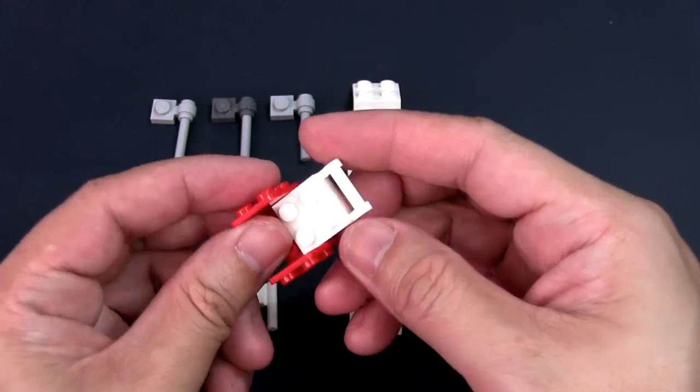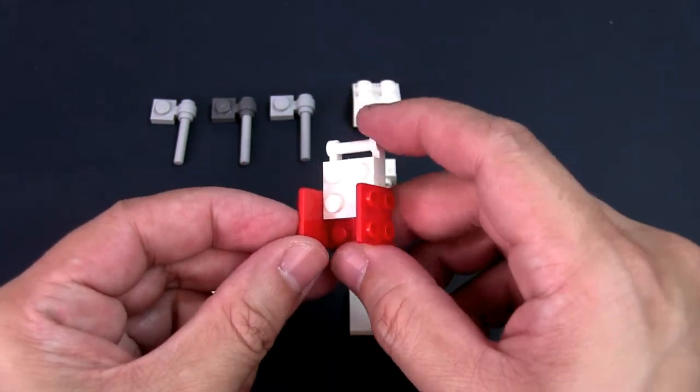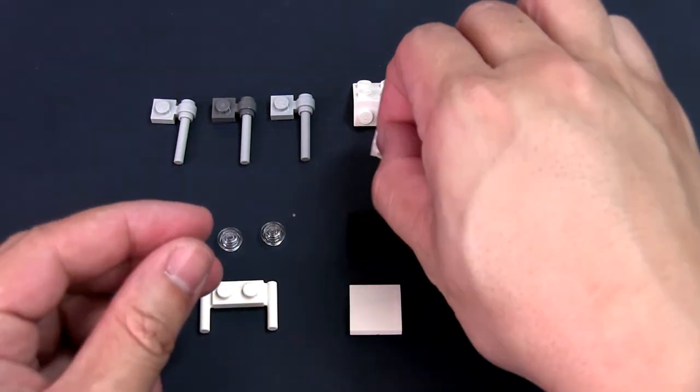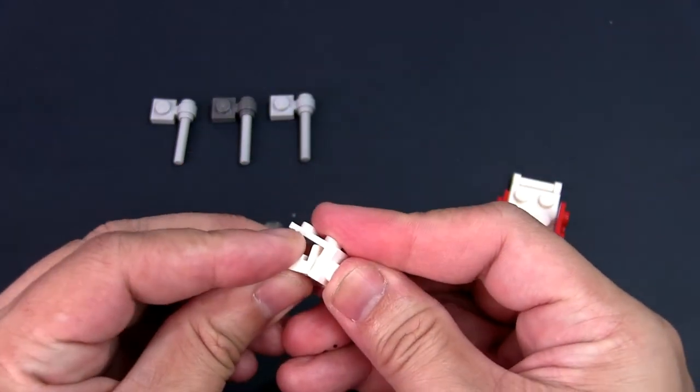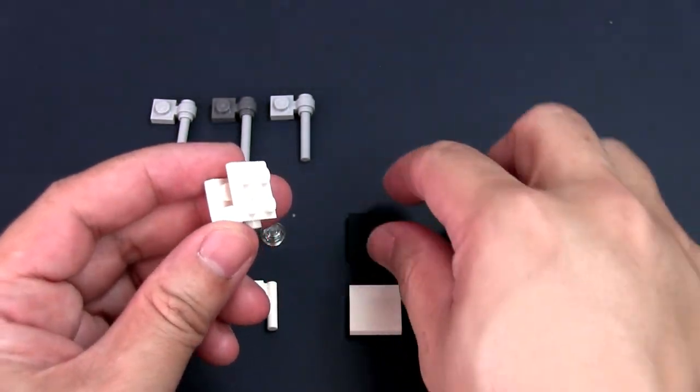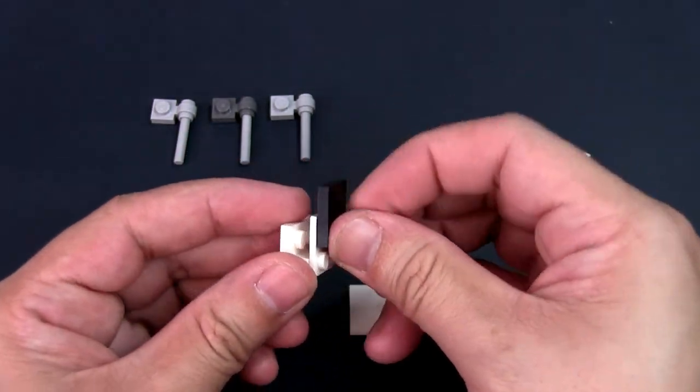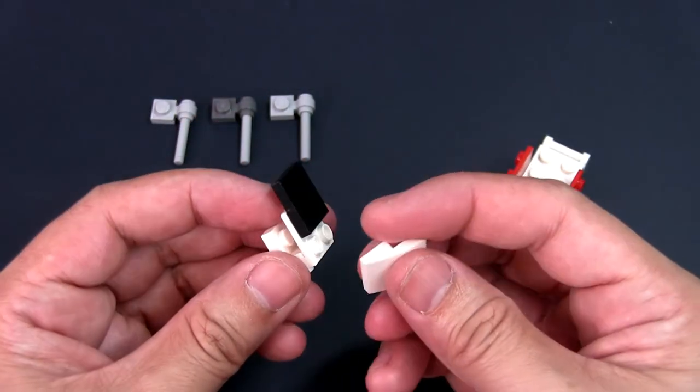Take the modified plate with the bar and place it at the top back of the 2x2 plate. Attach the two remaining modified plates together to form a U-shape. Take the 2x2 black tile and place it over the front of a modified plate and use the curved white tile to cap it in place.